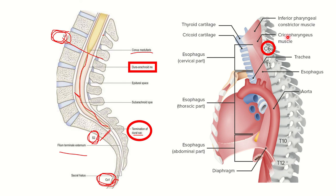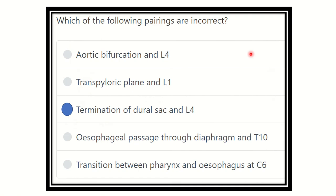In the next picture, we can see different structures including the thyroid cartilage, cricoid cartilage, and trachea bifurcating. We can see the esophagus and the diaphragm. At the cervical 6 vertebral level, the pharynx terminates and the esophagus begins — this transition between the pharynx and esophagus occurs at cervical 6.